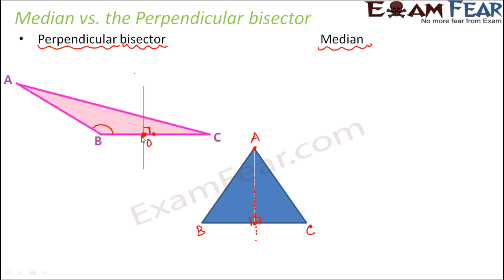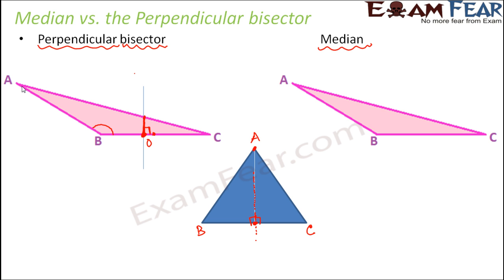Now, do you think that this same line is also going to be the median? Definitely not, because the median is the line which joins the midpoint of BC to vertex A. So the median for the same triangle would look like this — a completely different line. The perpendicular bisector and the median do not coincide in this triangle; they are completely different lines.